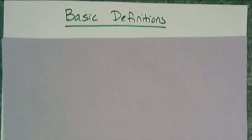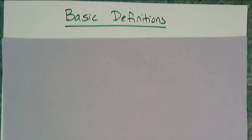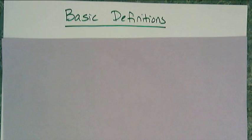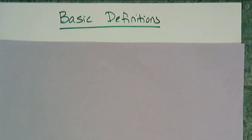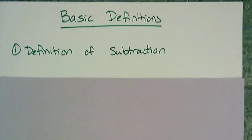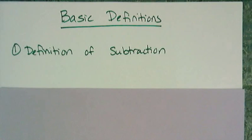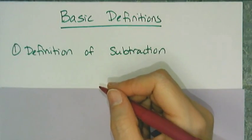In this lesson, we're going to talk about some basic definitions we'll use to simplify algebraic expressions. These definitions will be used as justification for our steps, because you don't just do a step — you have to prove that you can actually do that step, and that's called a justification. We start with definitions that make everything work. The first is the definition of subtraction: subtracting is adding the opposite.